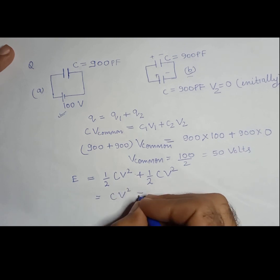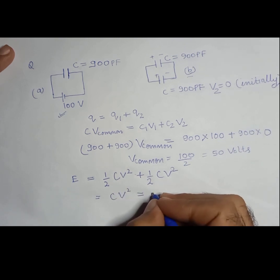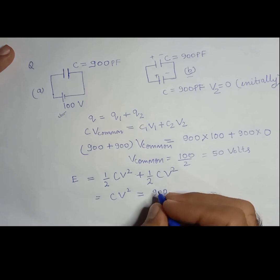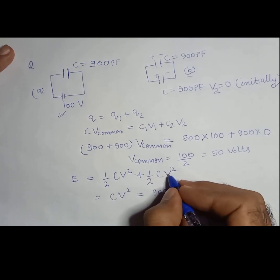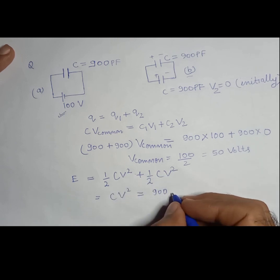So in the second capacitor also you have common potential V, so it would be CV square. So how much would it be? C is 900. So basically, C here is C1, C here is C2, and V is common potential.